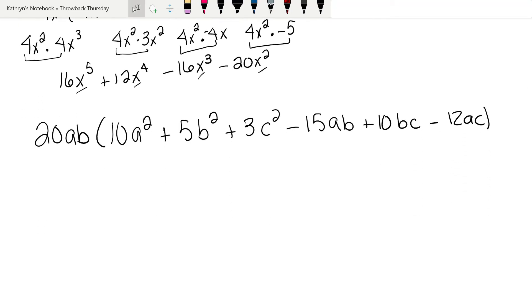Okay. All right, well, we're going to use the distributive property again. So I'm going to write these out like I did the last one. 20ab times 10a². 20 times 10 is 200. a is a to the first, so I have three a's. a³b.